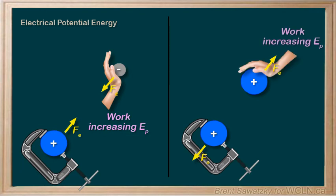If we were to release them, their potential energy would be converted to kinetic energy, and they both shoot off in opposite directions.